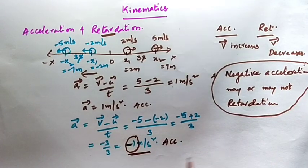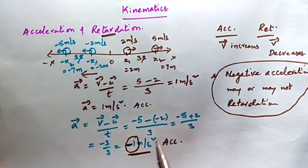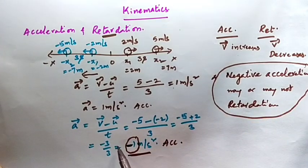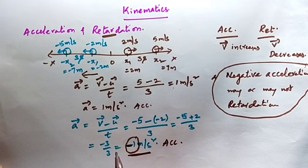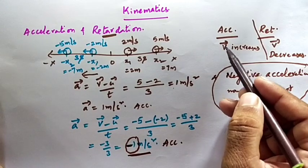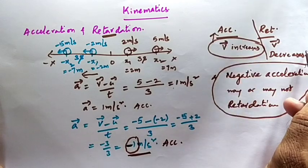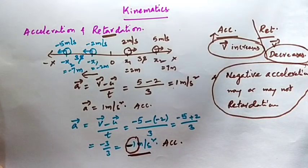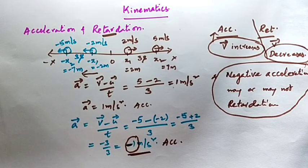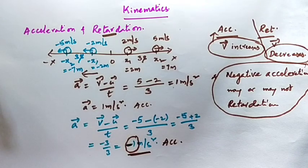If a body has negative acceleration, we cannot immediately say its motion is retardation. It may or may not be. This example shows that: we got negative acceleration, yet the velocity is increasing, so it is not retardation — it is accelerated motion. So to determine whether a motion is acceleration or retardation: if velocity is increasing it is accelerated motion; if velocity is decreasing it is retardation. Always saying negative acceleration means retardation is wrong.